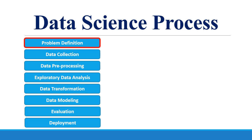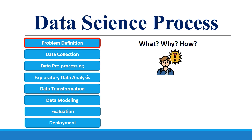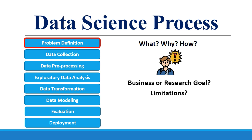The first step in the data science process is problem definition. You have to define the problem — what is the problem, why is this problem significant, and how are you going to solve it using the data science process. You also have to formulate a clear business or research goal, and list the limitations about the data, about the techniques, or anything relevant to your research problem.